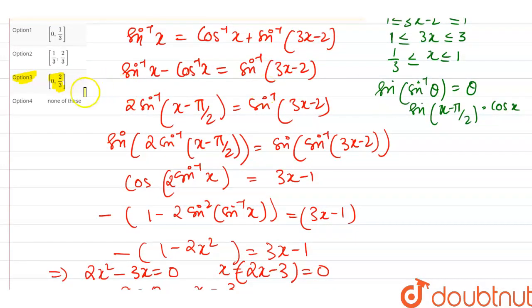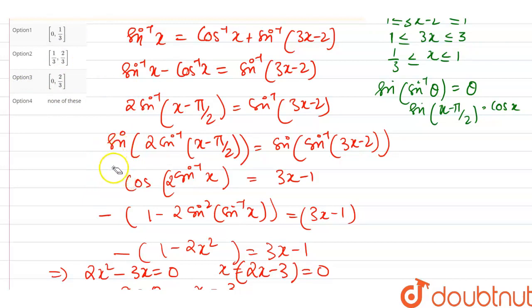Wait — there is no matching option. Our answer is {0, 3/2} but option C shows 2/3, not 3/2. So the correct answer is option D: none of these.